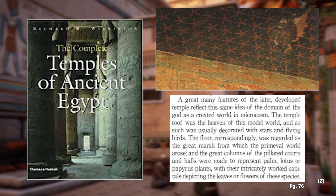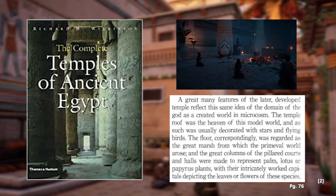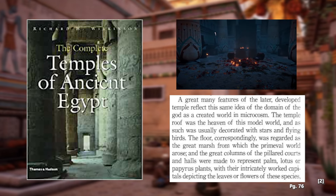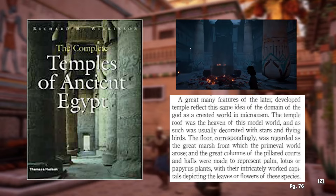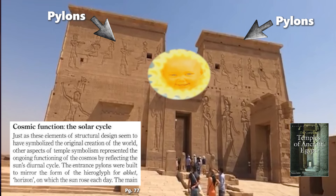Now, the tops of Egyptian temples were sometimes covered in stars. A great many features of the later developed temple reflect the idea of the domain of the god as a created world in microcosm. The temple roof was the heaven of this model world, and as such was usually decorated with stars and flying birds. The floor correspondingly was regarded as the great marsh from which the primeval world arose, and the great columns of the pillared courts and halls were made to represent palm, lotus, or papyrus plants, with their intricately worked capitals depicting the leaves or flowers of these species. Elements of the structural design seemed to symbolize the original creation of the world according to the ancient Egyptian, while aspects of the temple symbolism also represented the ongoing functioning of the cosmos by reflecting the sun's diurnal cycle.